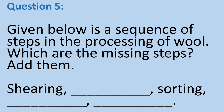Question 5: Given below is a sequence of steps in the processing of wool. Which are the missing steps? Add them. The sequence shown is: Shearing, dash, Sorting, dash and dash.